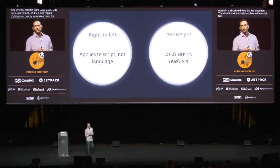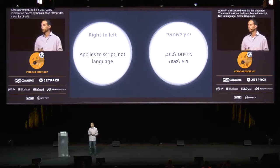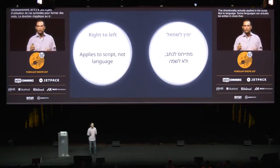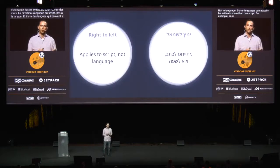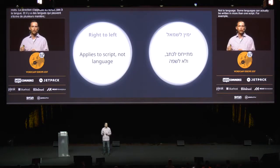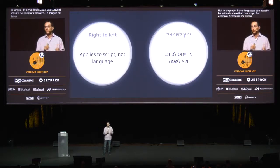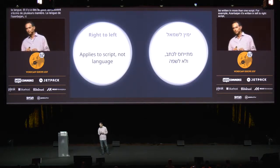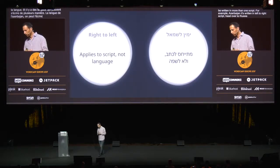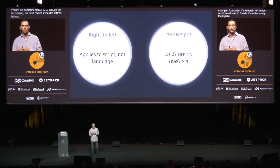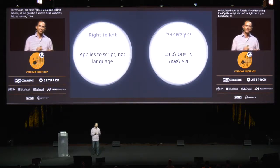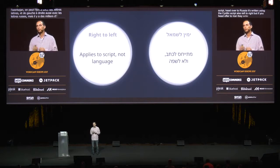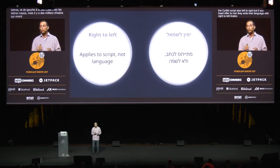Some languages can actually be written in more than one script. For example, Azeri. In Azerbaijan, it is written using a left-to-right Latin script. Head over to Russia, it is written using the Cyrillic script, also left-to-right. But if you head over to Iran, where there are millions of Azeris, they write their Azeri with a right-to-left Perso-Arabic script. So the same language, but three different ways to write it.